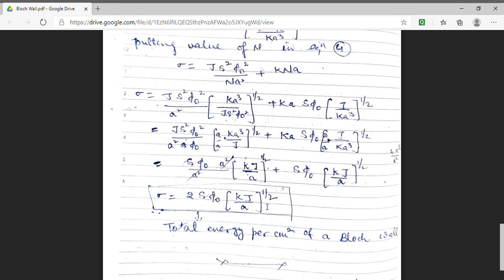Here s is the magnitude of spin, phi naught is the angle between two domains, k is the anisotropy constant, J is the exchange parameter, and small a is the lattice constant. So in today's lecture we have discussed the total energy of a Bloch wall — a wall which separates the two domains in a ferromagnetic material. Thanks a lot for watching.